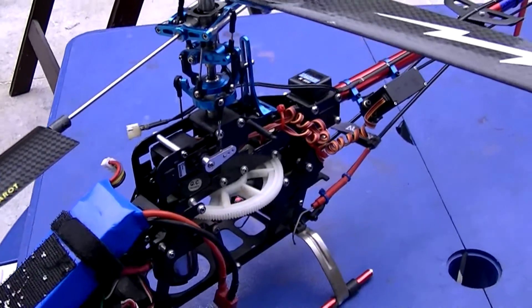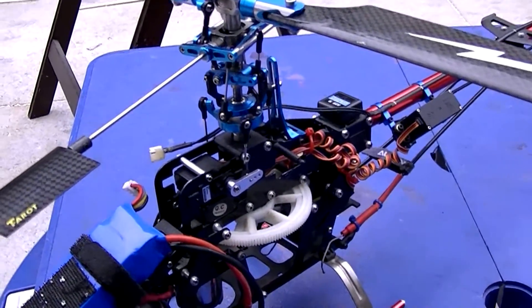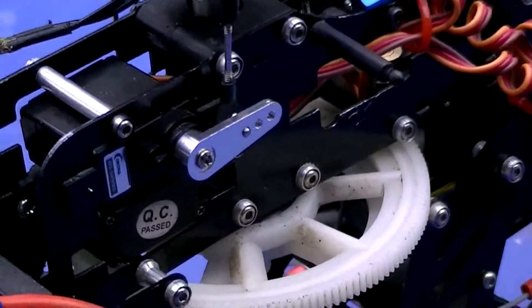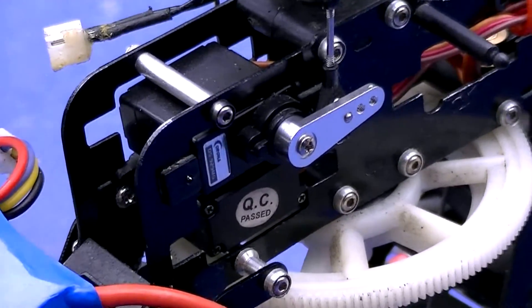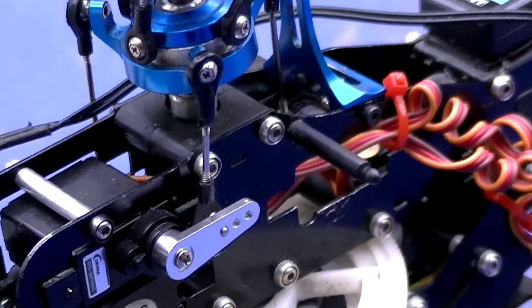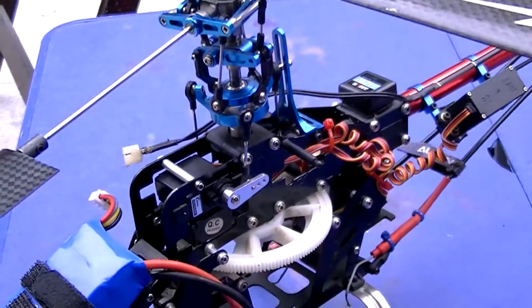Alright fellas, we got our MG servo arms installed on the Corona 929 MG servos. The only thing we can break on this bird is our heart.